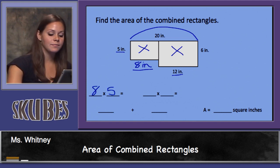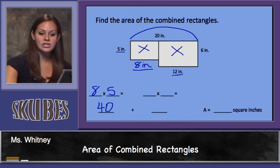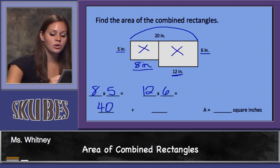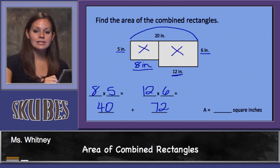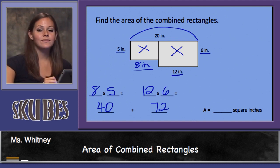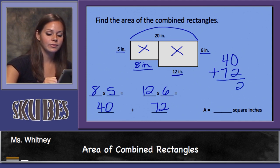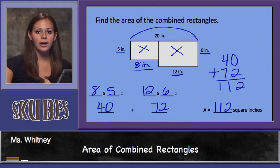8 times 5 equals 40 square inches. Next I'll find the area of the second section: 12 times 6, which is equal to 72. Now I need to add the areas of each section to find the area of the entire shape: 40 plus 72. The area of the shape is 112 square inches.